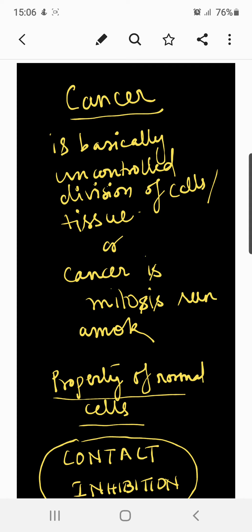Normally the cells of a given tissue divide at a certain fixed rate and in a controlled manner. For instance, the cells lining the gut are replaced completely every 36 hours, skin cells every few days, and red blood cells every few weeks. Sometimes, for reasons not yet clear, mitosis occurs in these tissues at rates far above normal and in an uncontrolled fashion.